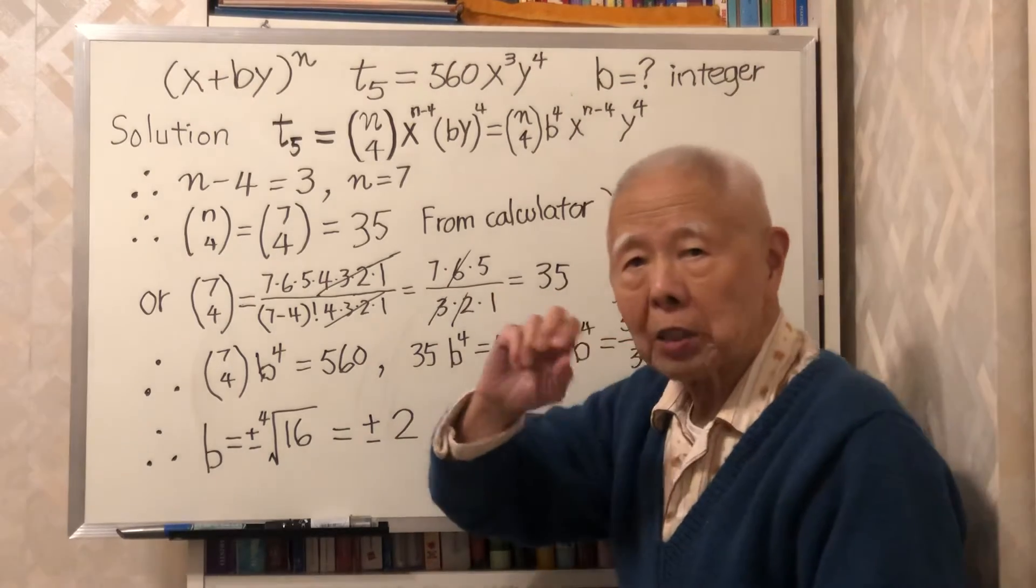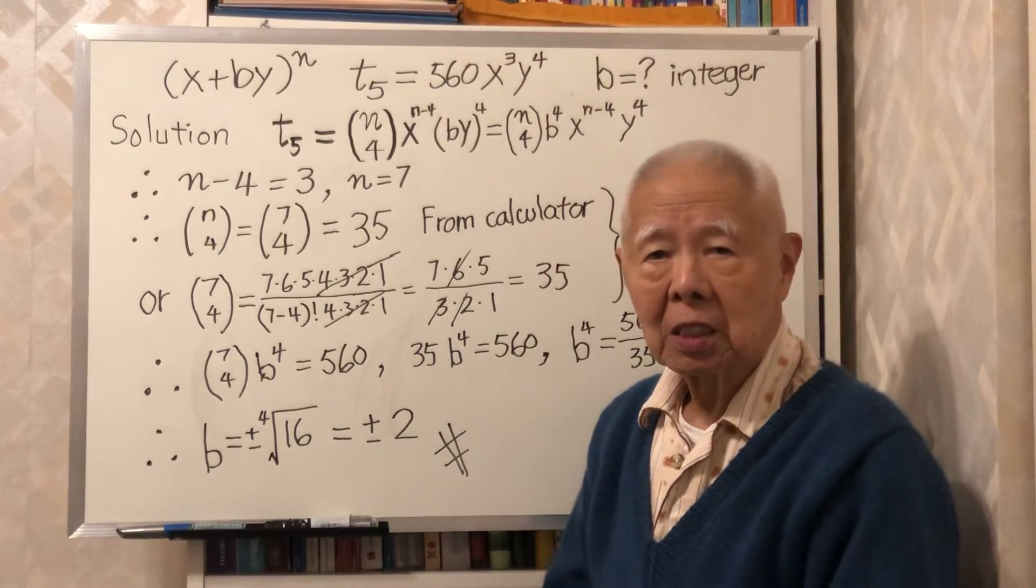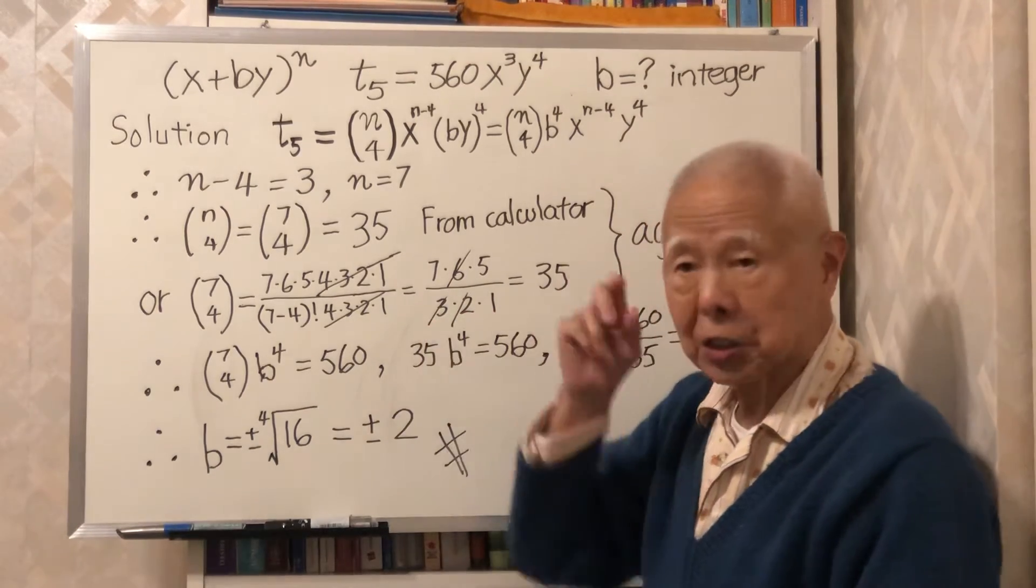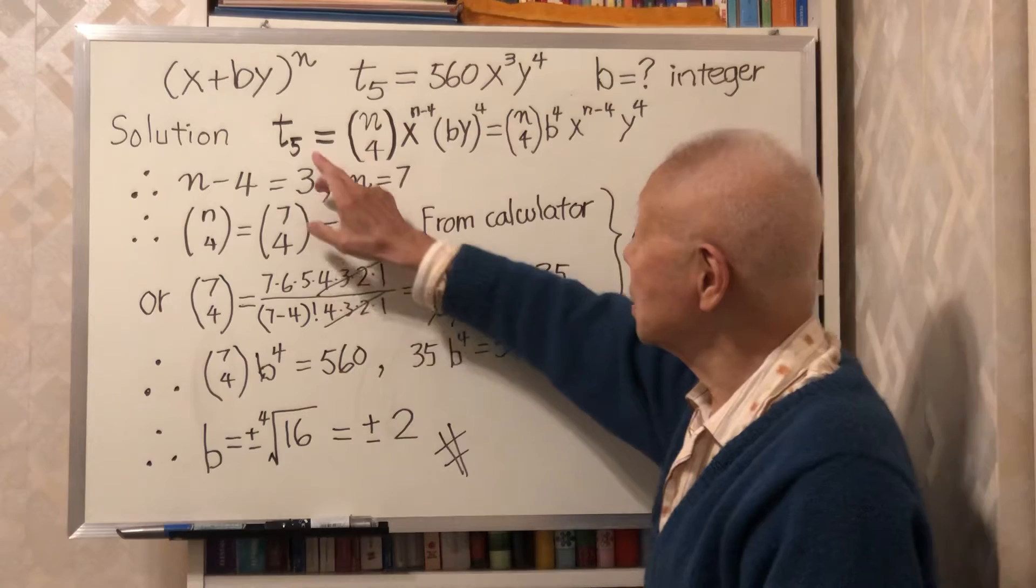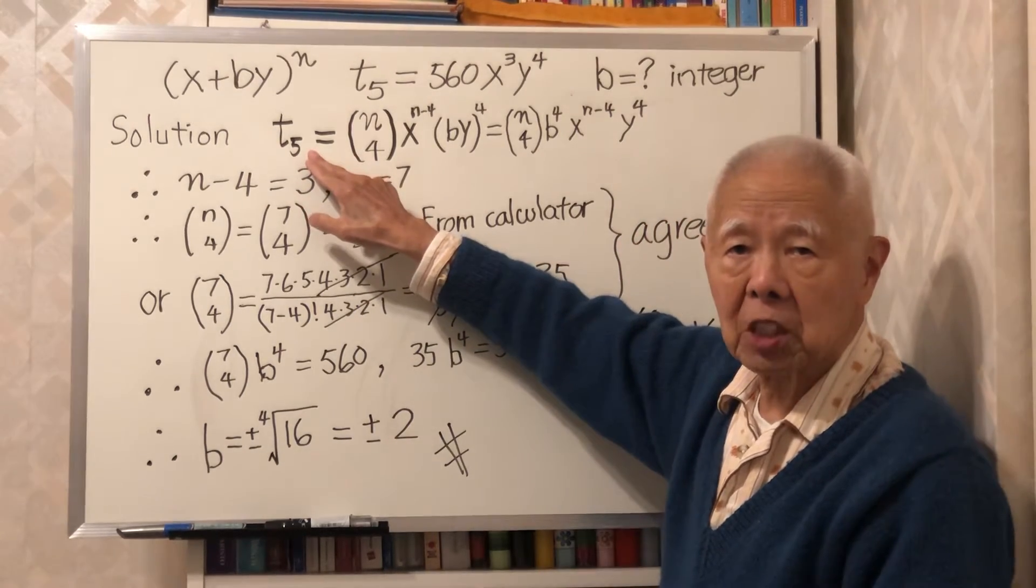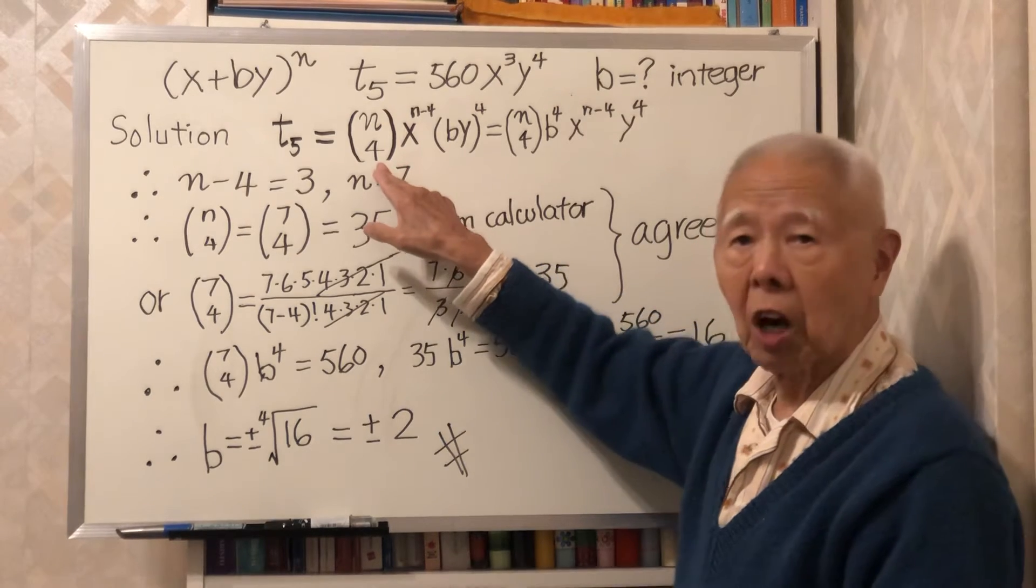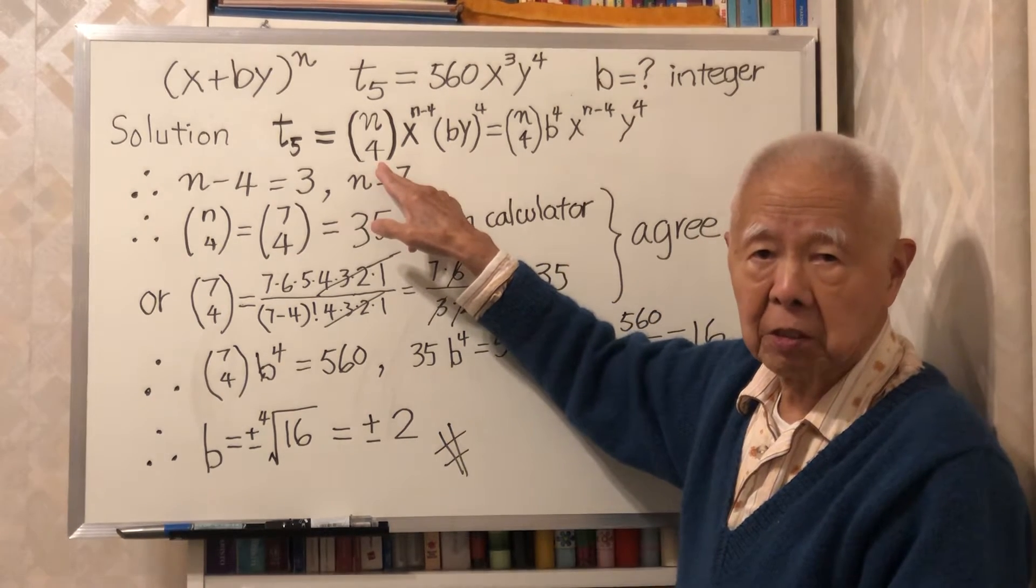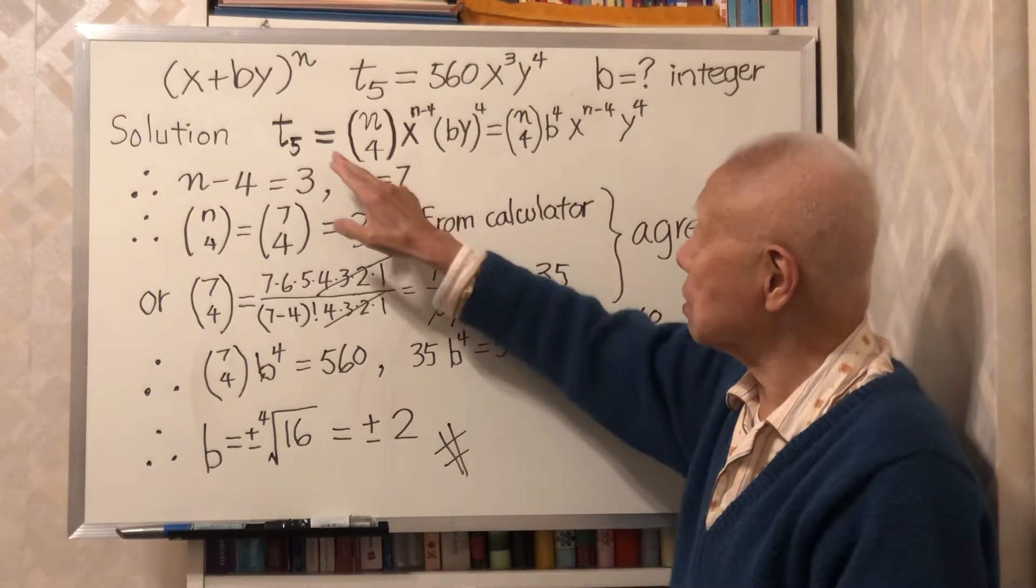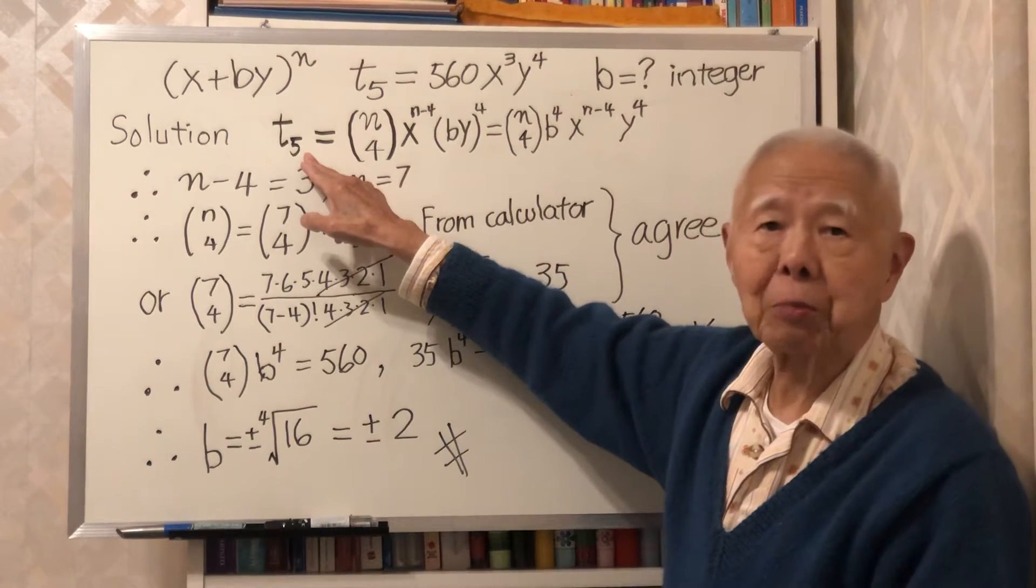When you expand a binomial, there is a formula. The general term. The fifth term is combination n choose 4. Four is 5 minus 1.